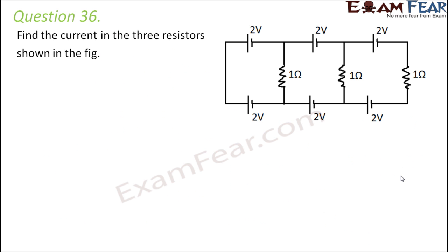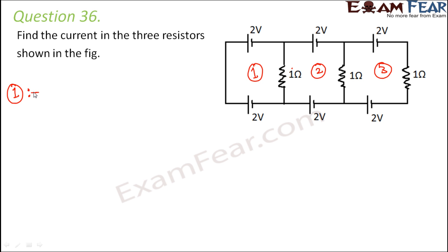Question number 36. Find the current in the three resistors shown in the figure. The arrangement is a symmetric kind of circuit where you have two cells and one resistance, and the same pattern repeats. We will solve this using Kirchhoff's laws, which will also serve as a quick revision. We can distinctly identify three loops — let us name them circuit 1, 2 and 3.